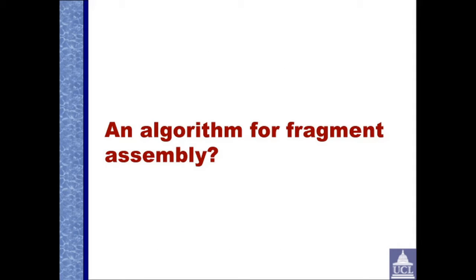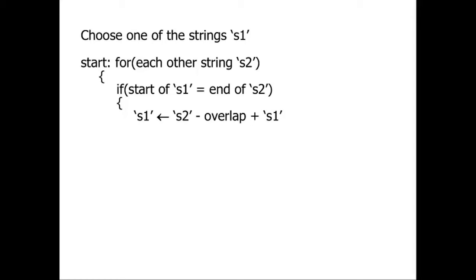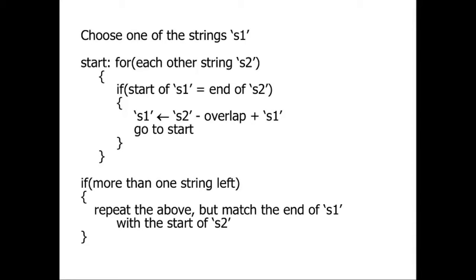What about doing that for fragment assembly? We choose one of the strings of text, S1, and at the start we say for each other string of text, S2, if the start of S1 equals the end of S2, then we combine the two together. We're taking S2 plus S1 but removing the overlap from one of these, and calling that the new string S1. We go back to the start and keep looping around until we've run out of strings. If there's more than one string left at the end, then we repeat the above but match the end of string S1 with the start of string S2.